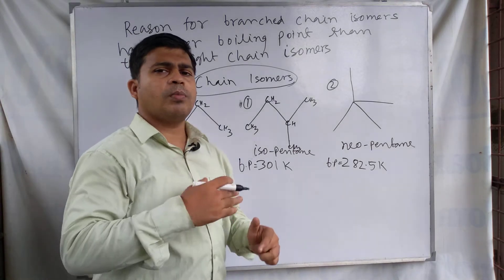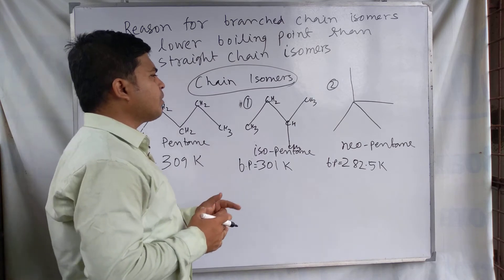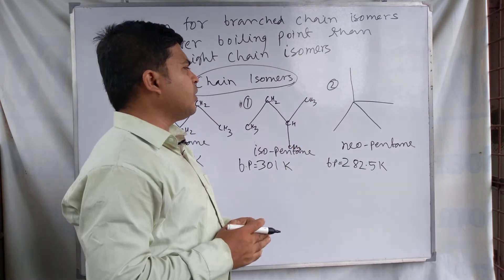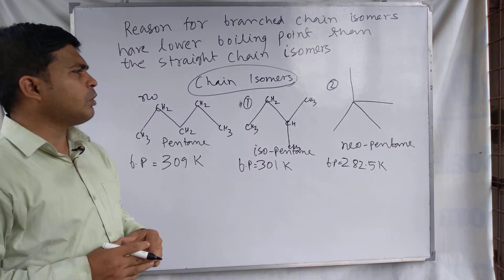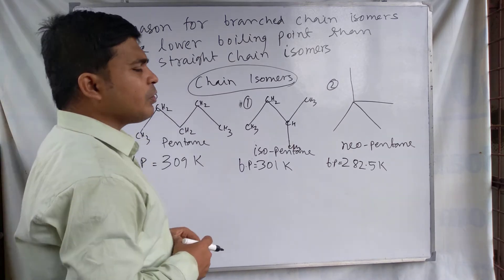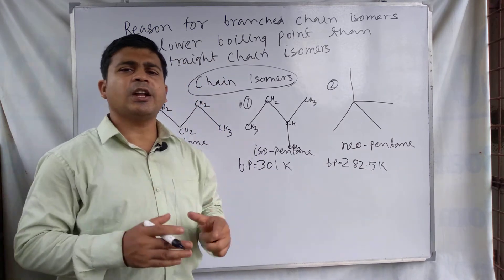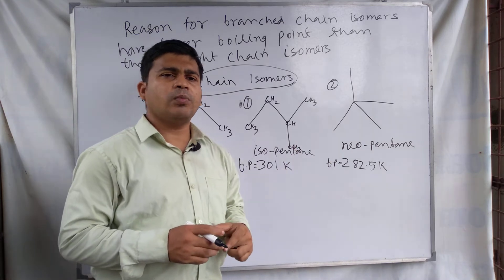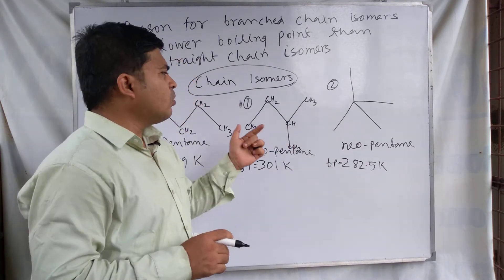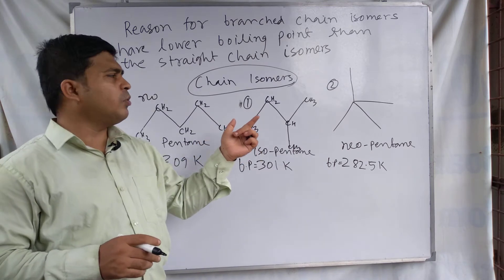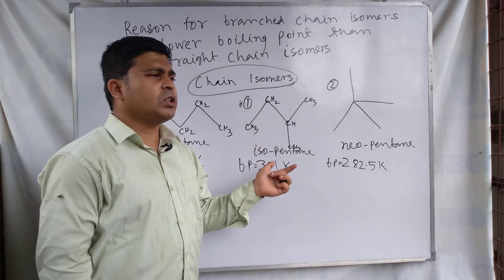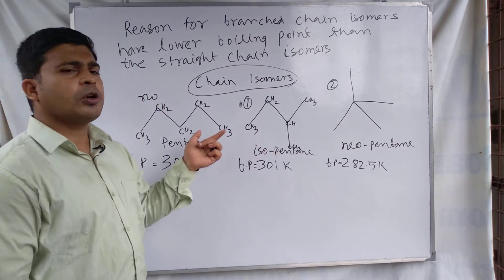With the increase in the number of branches, the molecule becomes more spherical. To discuss the boiling point of alkanes, we have to consider intermolecular forces. Alkanes are formed by covalent bonding, and one alkane molecule attracts another by very weak, short-range van der Waals forces of attraction.